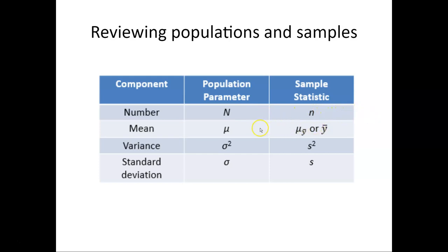The mean is mu for the population. The mean is mu sub y bar or just y bar for the sample. The variance is sigma squared for the population or s squared for the sample. And remember if we take the square root we can get the standard deviation of the population to be sigma or the sample statistic s.